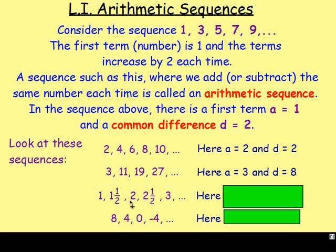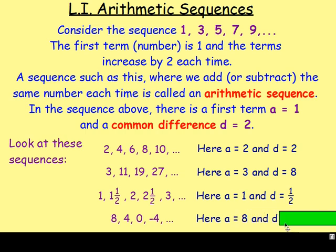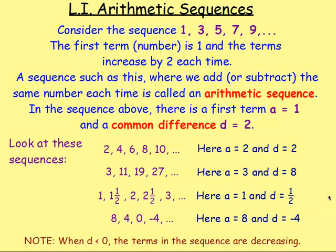For this one: 1, 1.5, 2, 2.5, 3, and so on. A is going to be 1, and d, the common difference, is going to be 0.5. Next one: 8, 4, 0, negative 4. A is going to be 8, and d, the common difference, is going to be negative 4. If d is less than 0 — here d is negative 4 — it means the terms in the sequence are decreasing, as you can see — you're going down.